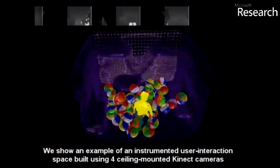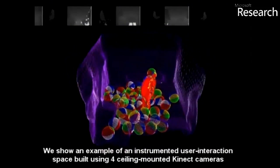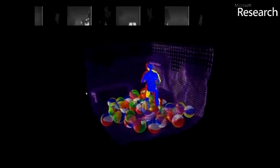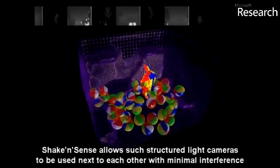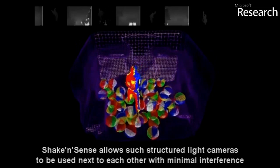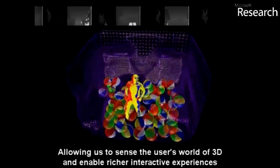This is an example of an instrumented user interaction space, built using four ceiling mounted Kinect cameras. Motion induced blur allows such structured light depth sensors to be operated with minimal interference, even with overlapping views.